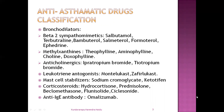The first subclass is beta-2 sympathomimetics. The examples of drugs for beta-2 sympathomimetics are salbutamol, terbutaline, bambuterol, salmeterol, formoterol, and ephedrine.